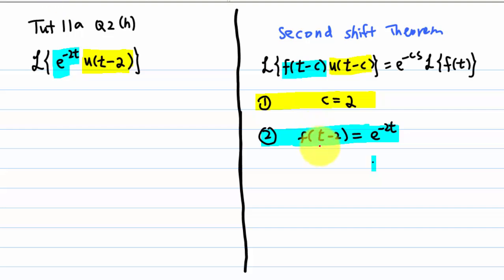Now, change the t to t plus 2. Then, we are going to have our f of t.